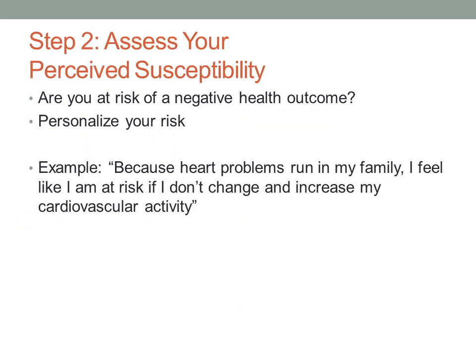Step two: assess your perceived vulnerability or susceptibility. This addresses how much you feel at risk of something bad happening with your health if you don't change your behavior. To make this work for you it must be personalized — in the example, family and genetic background is used to show that the individual is at risk if they don't change.